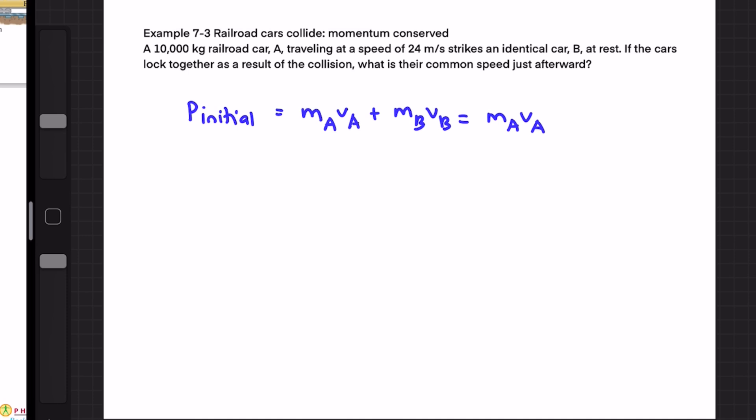So after the collision the two cars become attached so they will have the same speed called v prime. The total momentum after the collision will be p final equals mA plus mB times v prime. So p final and p initial will be equaled together. So therefore mA vA equals mA plus mB times v prime.